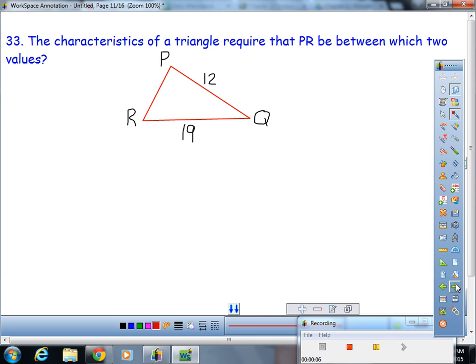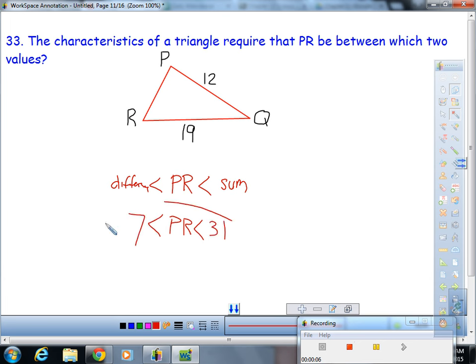The characteristics of a triangle require that PR be between which values? This is testing your knowledge of the triangle inequality theorem. To put it simply, PR has to be less than the sum and greater than the difference. I've explained this earlier in the year, so you might want to go back and check that video from one three. So PR is less than 31 and greater than seven. Have a good weekend, make a decision, study for your test.